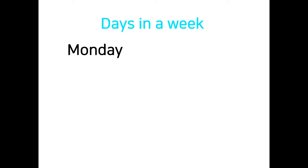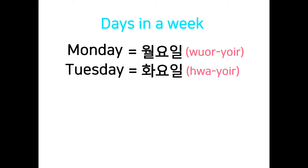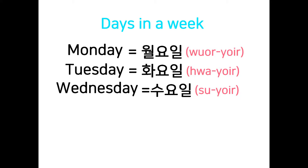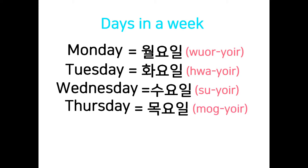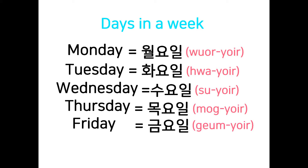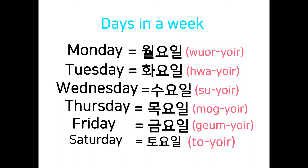Monday is called 월요일. Tuesday is 화요일. Wednesday is 수요일. Thursday is 목요일. Friday is 금요일. Saturday is 토요일. Sunday is 일요일.